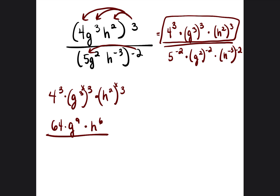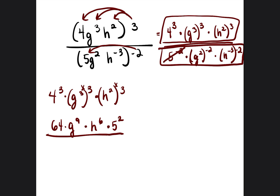Now let's handle the bottom. We have 5 to the negative 2 — I like putting that on top to make it a positive 5 squared, which is 25. When you have a whole number with a negative exponent, just put it on the other side of the fraction. Then g squared to the negative 2 is g to the negative 4, and h to the negative 3 times negative 2 is h to the positive 6. So 5 squared is 25.